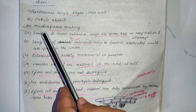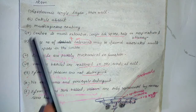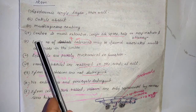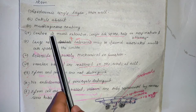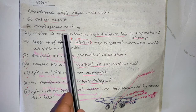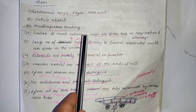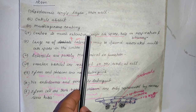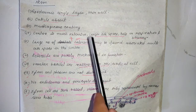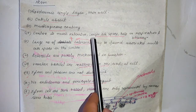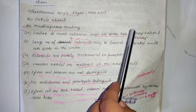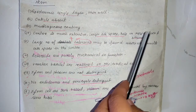Inner to the epidermis, cortex is present, which is much extensive and many layers in thickness. It contains a large number of air spaces, which help in buoyancy and respiration.